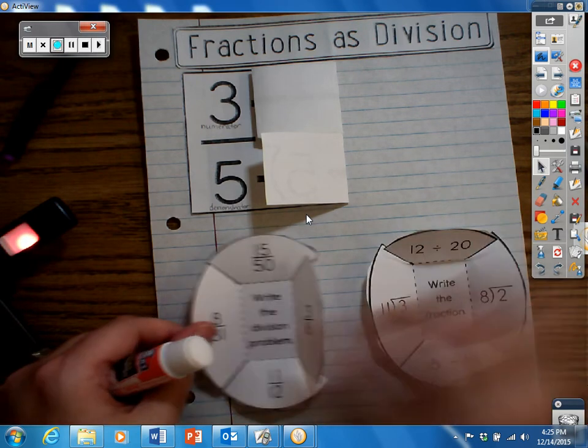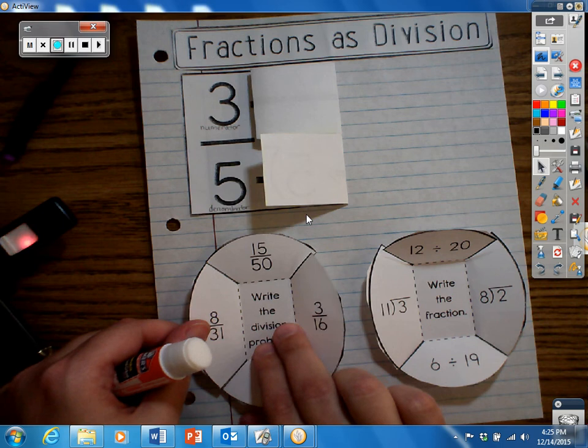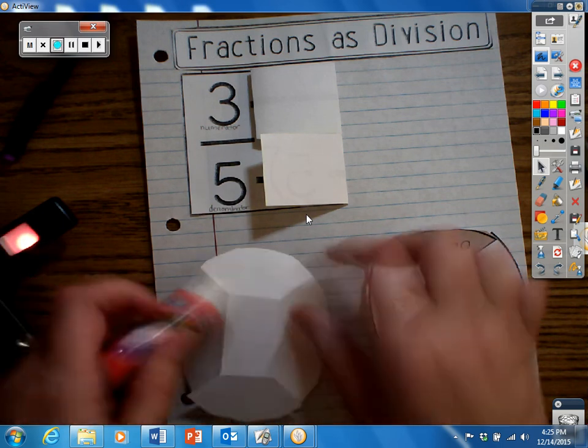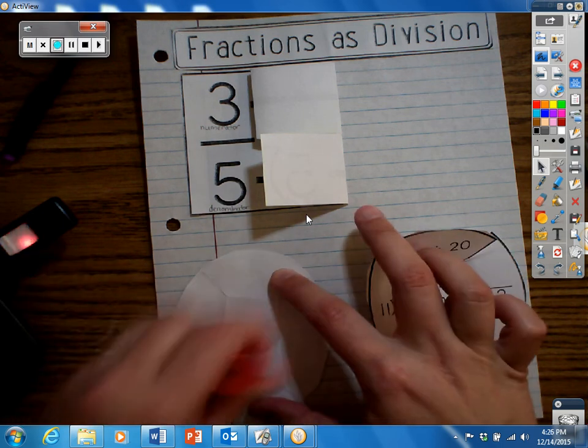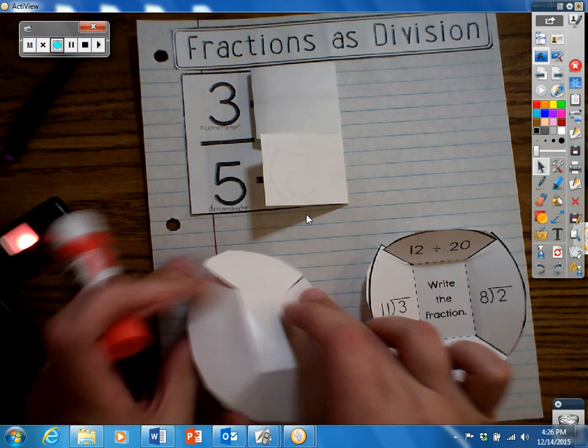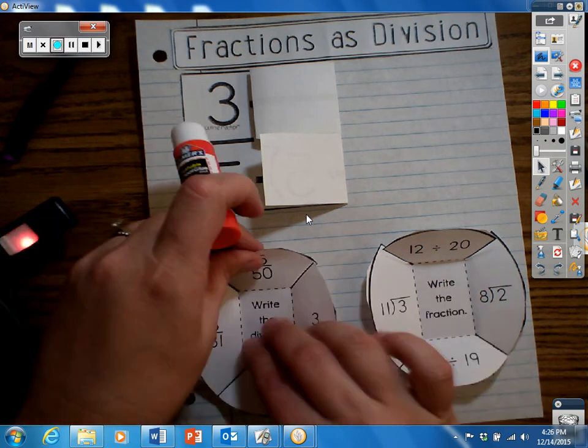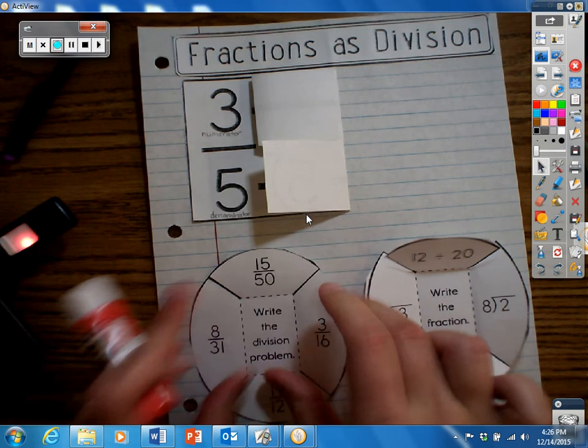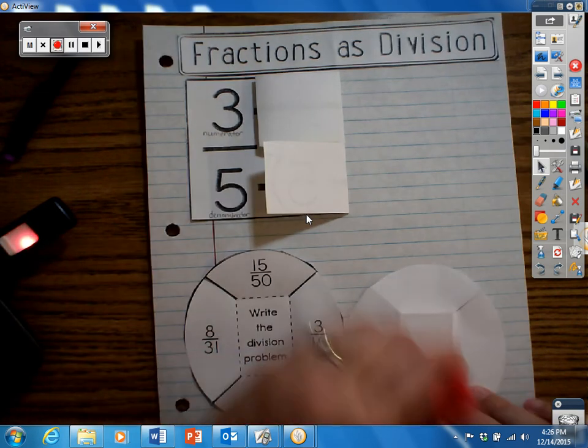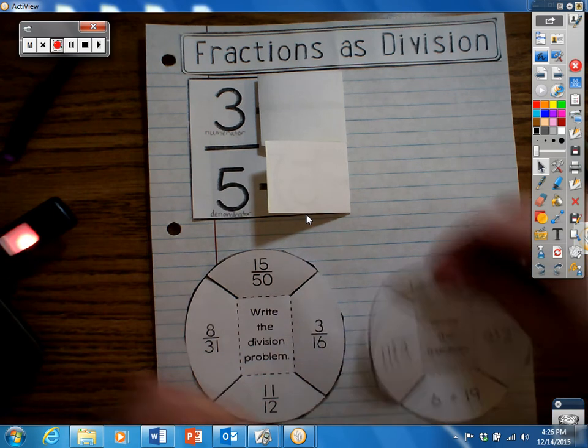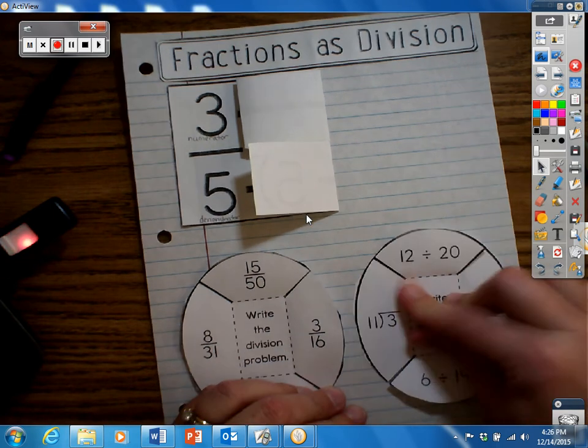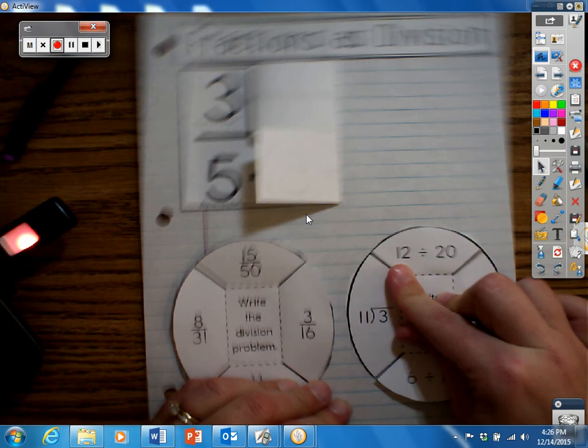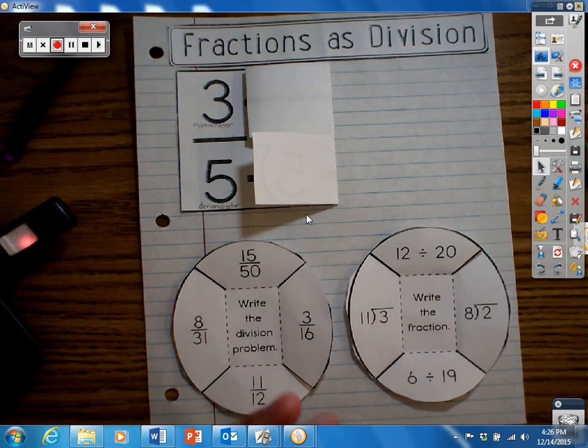And then we're gonna take our glue stick and we're gonna be gluing the division problem on the left. Remember, don't glue the flaps down because then we can't use them. And then we're gonna glue the fraction on the right. Cap my glue stick so it doesn't dry out and ready to move on.